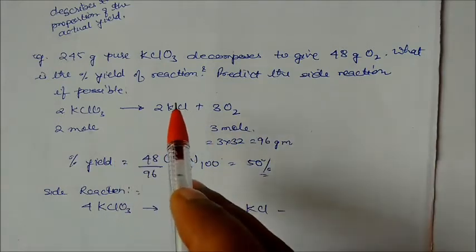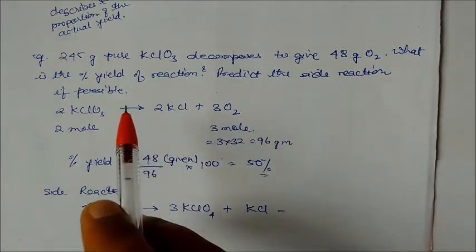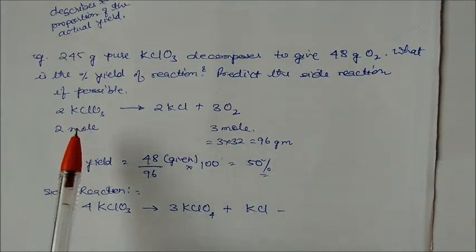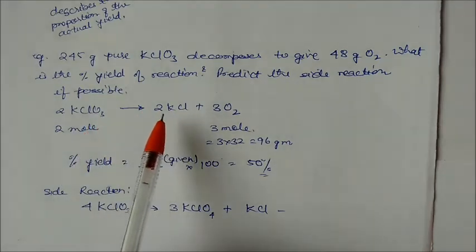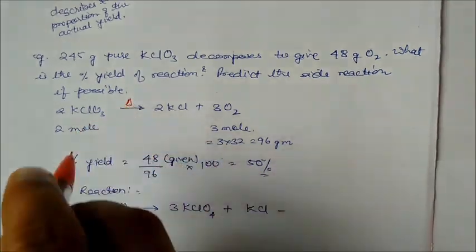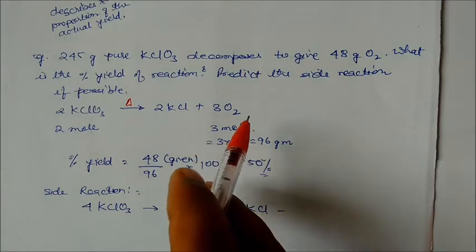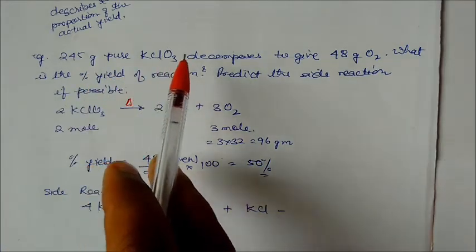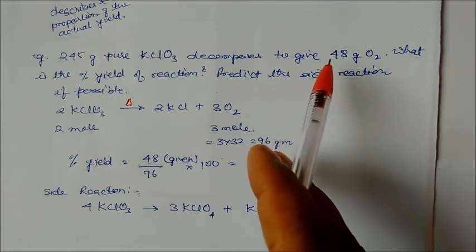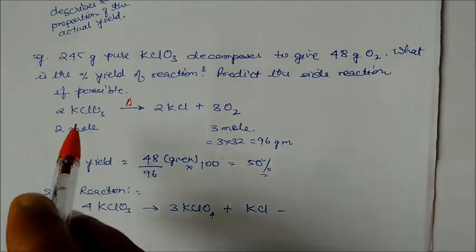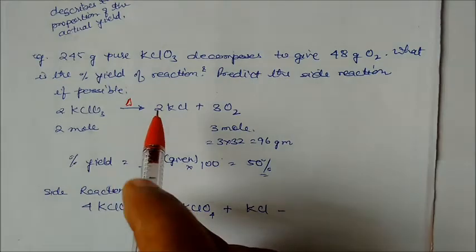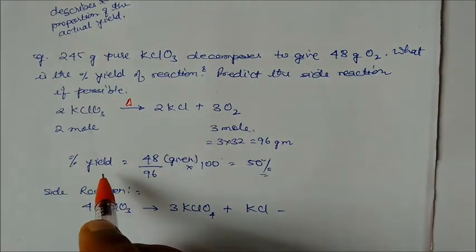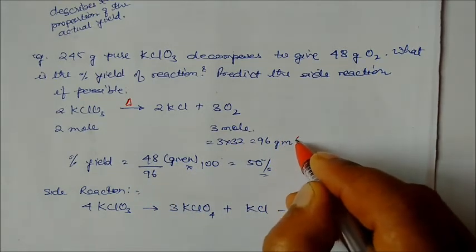Example: 245 grams of KClO₃ decomposes to give 48 grams of oxygen. What is the percentage yield? Write the balanced equation: 2KClO₃ → 2KCl + 3O₂. For 2 moles of KClO₃ we get 3 moles of oxygen = 96 grams of O₂. Given 245 grams of KClO₃, theoretical yield = 96 grams, actual yield = 48 grams.